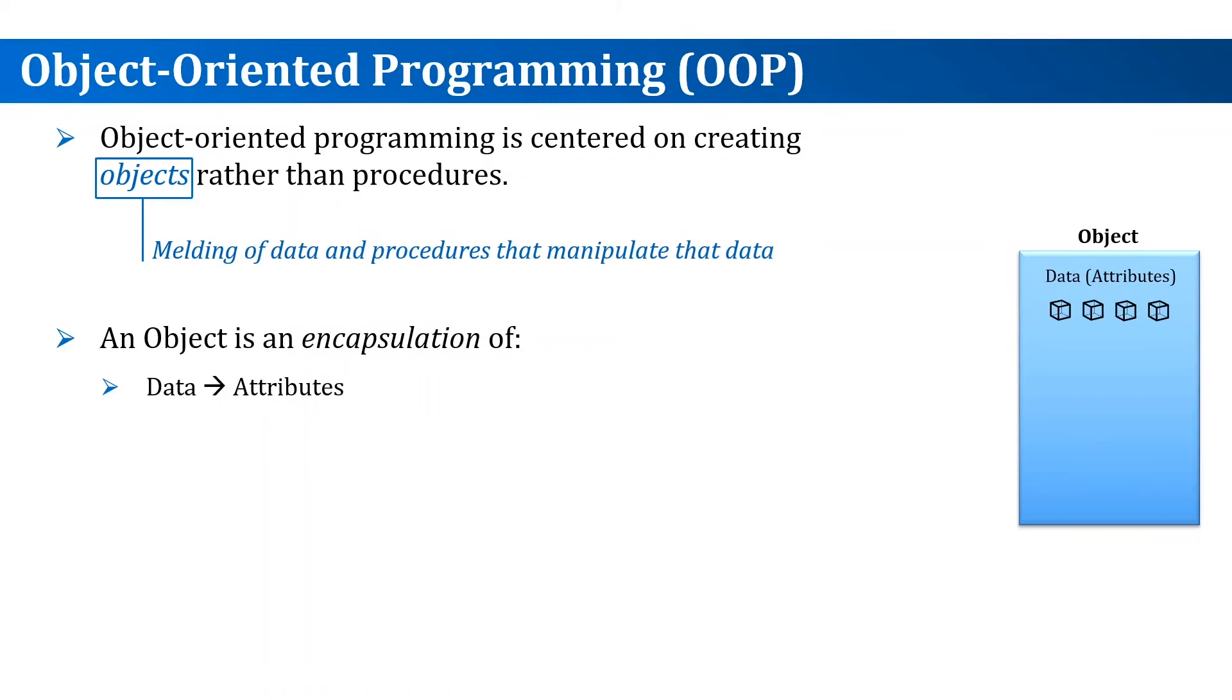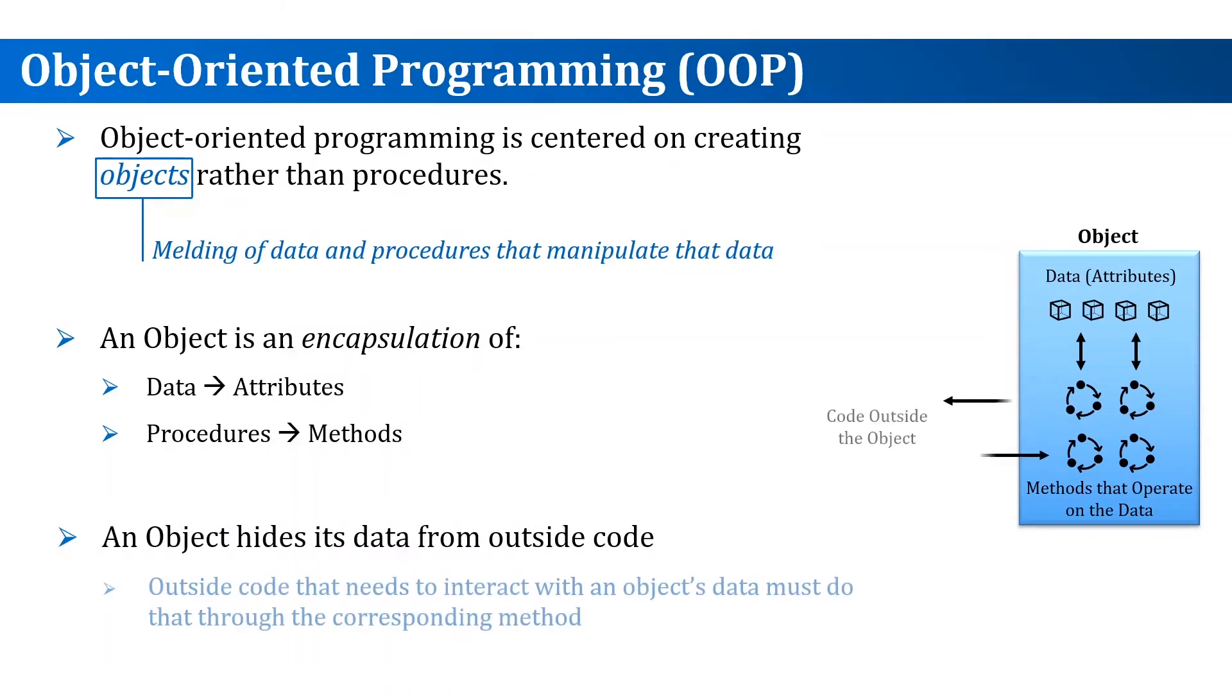To distinguish between OOP and the procedural paradigm, data are referred to as attributes. They are the attributes that describe the object. And procedures are referred to as methods. They are the methods that operate on the object's attributes. For the outside code to interact with an object's data, the code must do it through the object's methods. This is called data hiding and it's crucial.